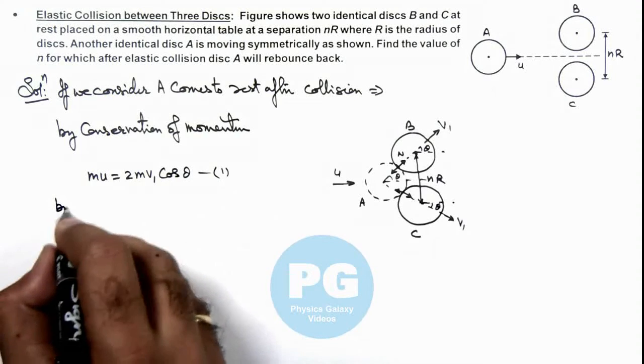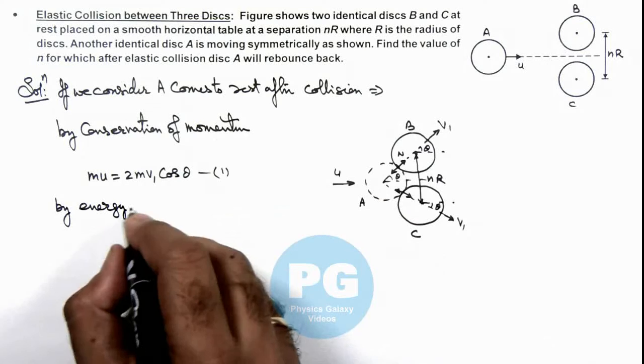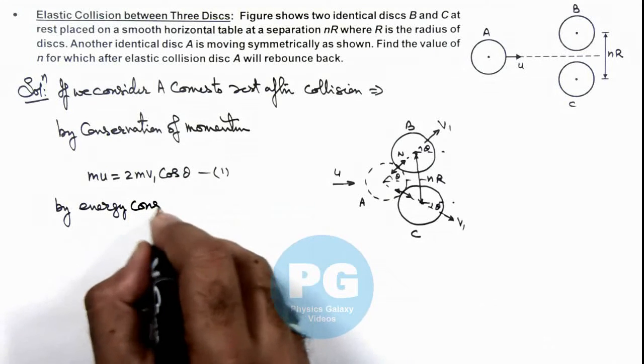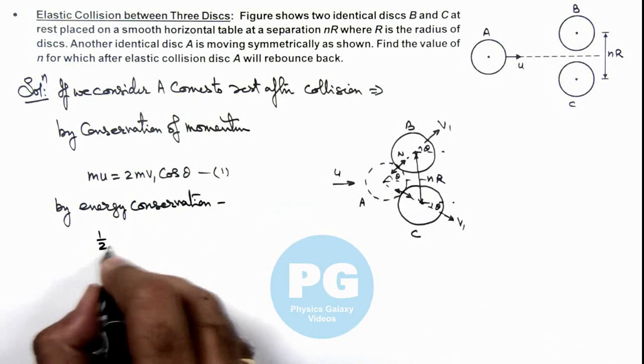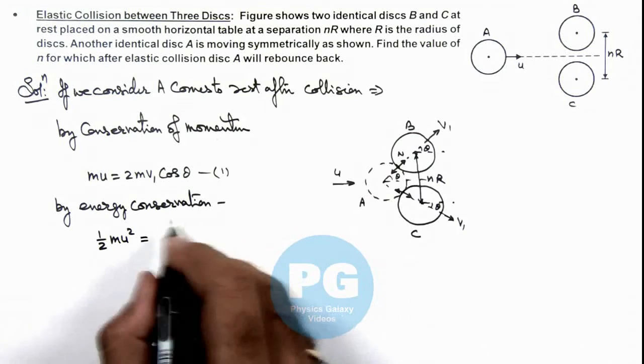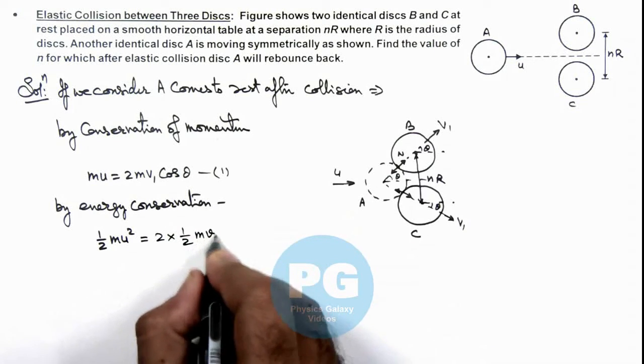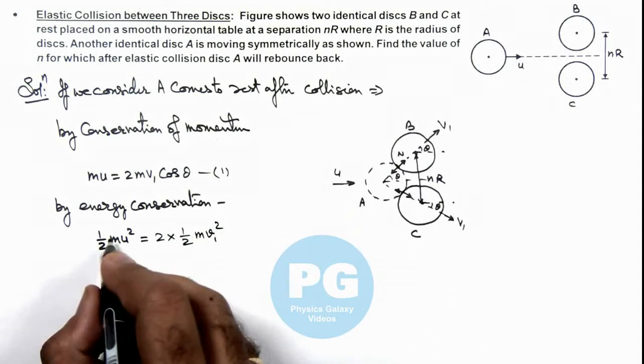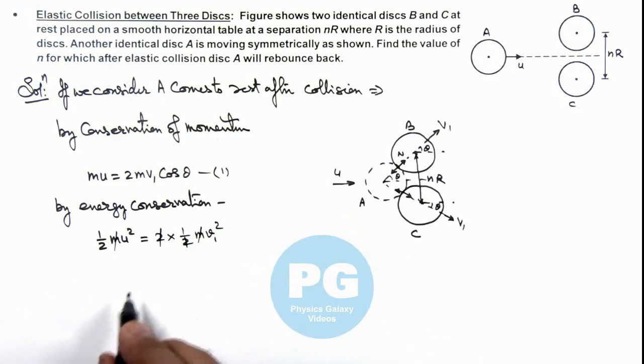By energy conservation, as collision is elastic, we can conserve energy. So by energy conservation, we have half mu squared as initial kinetic energy, and after collision final energy is twice of half m v1 squared. Here m gets cancelled out and this 2 also gets cancelled out.